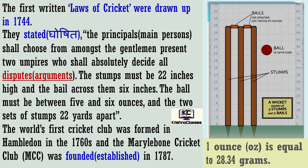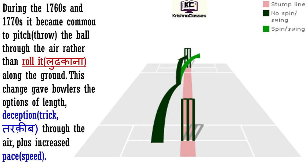The world's first cricket club was formed in Hambledon in the 1760s and the Marylebone Cricket Club was founded in 1787. World ke pehle cricket club ki sthaapna Hambledon mein 1760s mein hui aur Marylebone Cricket Club ko establish kiya gaya 1787 mein. During the 1760s and 1770s it became common to pitch the ball through the air rather than roll it along the ground. In 1760s aur 1770s mein yeh common ho gaya ki ball ko hawa mein uchhal ke fenka jaye, bajaye iske ki isko ground ke sahaare sahaare ludkaya jaye.